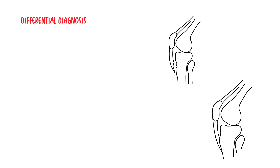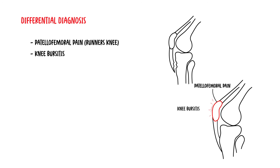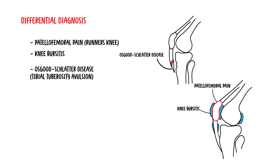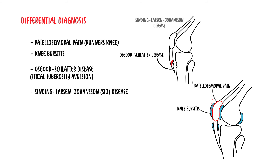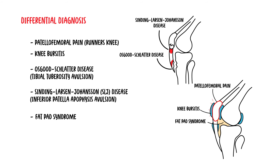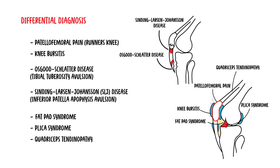Differential diagnosis for patella tendinitis and tendinopathy includes patellofemoral pain, also known as runner's knee; knee bursitis; Osgood-Schlatter disease, which is tibial tuberosity avulsion; Sinding-Larsen-Johansson disease, which is inferior patella apophysis avulsion; fat pad syndrome; Plica syndrome; and quadriceps tendinopathy, which would be located more superiorly to the patella.